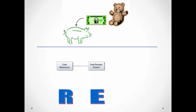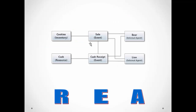So what does that look like in a class diagram? We see that we have two events — the sale and the cash receipt. We have two agents: the internal agent (the bear, or employees) and the external agent (the lion, or customers in general). We have two resources: cookies, which were inventory, and cash, which is our second resource.